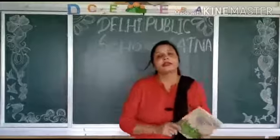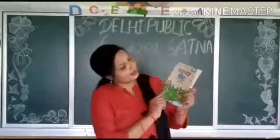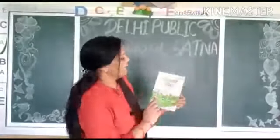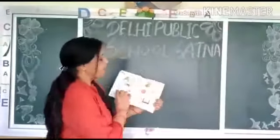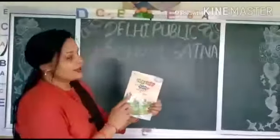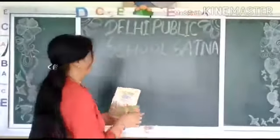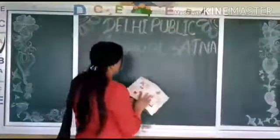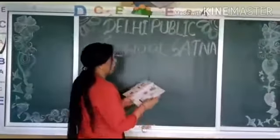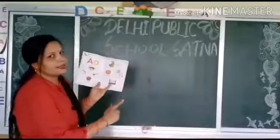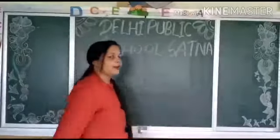So then, this is your English alphabet book. Which book? English alphabet book. Let's see — alphabets and related pictures name.